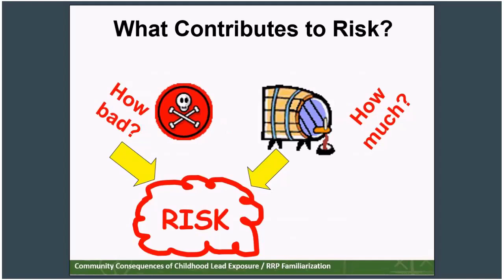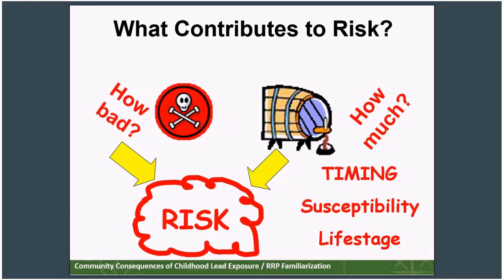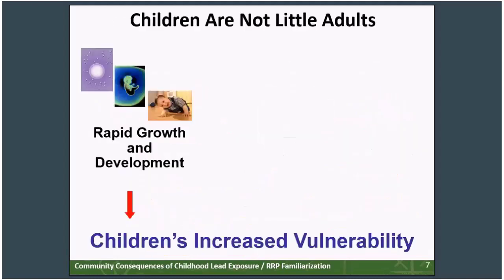When we consider risk, we also have to consider risk to whom. And when it comes to lead, children are the most vulnerable, because children are not little adults. I'm going to talk about three reasons that contribute to children's increased vulnerability to chemical contaminants. The first reason is that children, unlike adults, are going through rapid growth and development. That rapid growth and development starts in the womb and ends when a child is fully mature, sometime between the ages of 18 and 25. When a child is exposed to a chemical contaminant like lead, because the brain is growing and developing, that chemical has a greater opportunity of disrupting that growth, and the child is less likely to reach his or her fullest potential.